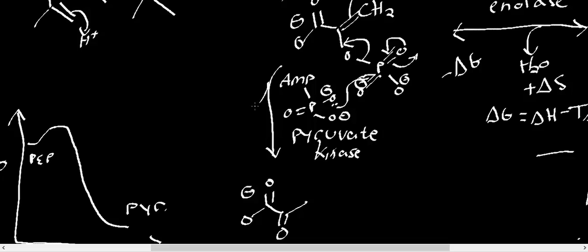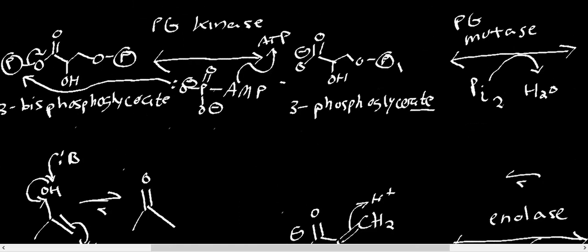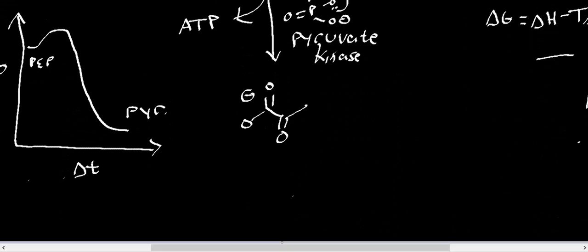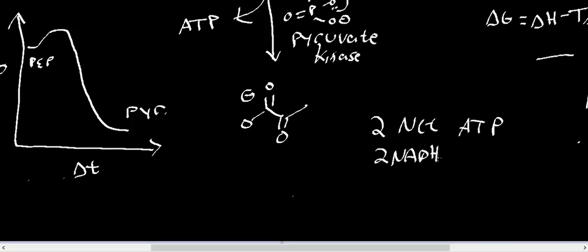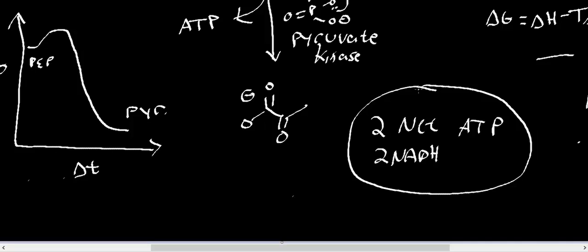This is also a generation of ATP. Remember there were two glyceraldehyde-3-phosphates, so there are two ATPs here and two from phosphoglycerate kinase — four total generated. We burned two in the preparatory phase, giving us a net of 2 ATP. Glyceraldehyde-3-phosphate dehydrogenase also generated two NADH, which go to the electron transport chain. So our net production for glycolysis is 2 net ATP and 2 NADH.